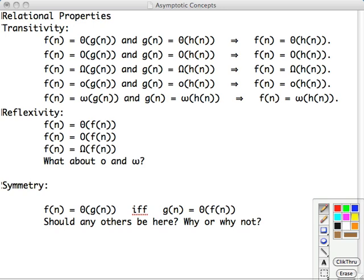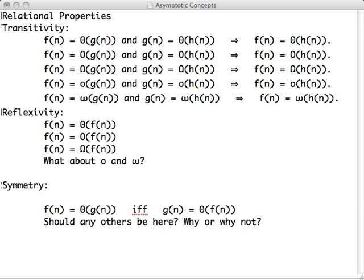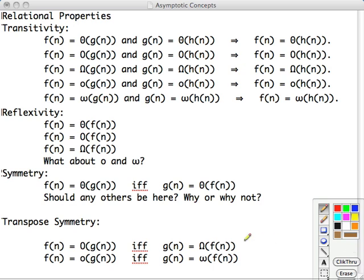And finally, let's take a look at transpose symmetry. Now here's transpose symmetry: f(n) is O(g(n)) if and only if g(n) is Ω(f(n)). That makes sense. Here we've got f(n) is in a subordinate relationship to g(n); this is just another way of saying it. And in a similar manner, f(n), if it is strictly less than, in a sense, g(n), that would be if and only if g(n) is strictly greater than f(n). Would any of the other ones work this way?